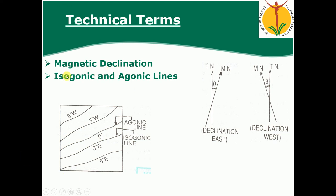Magnetic declination is the angle between the true meridian and the magnetic meridian. Magnetic declination may be east or west. Isogonic lines are lines passing through points of equal magnetic declination, while agonic lines are lines passing through points of zero declination.